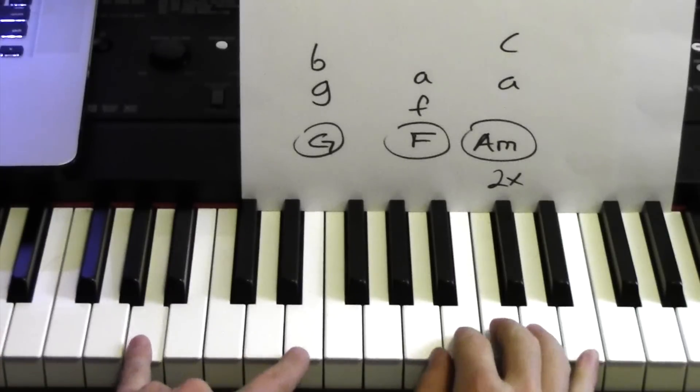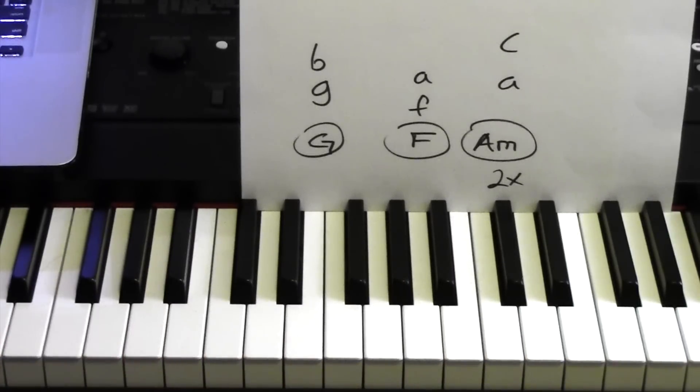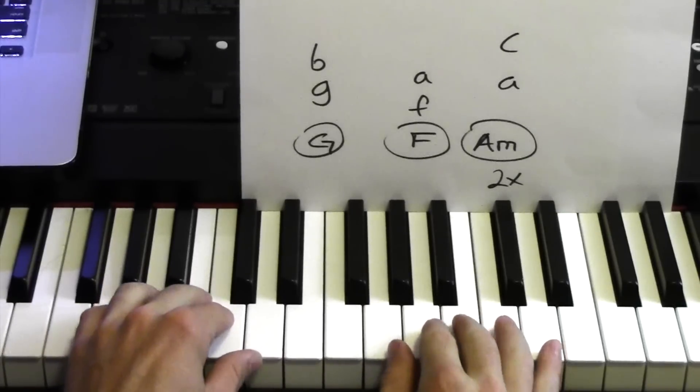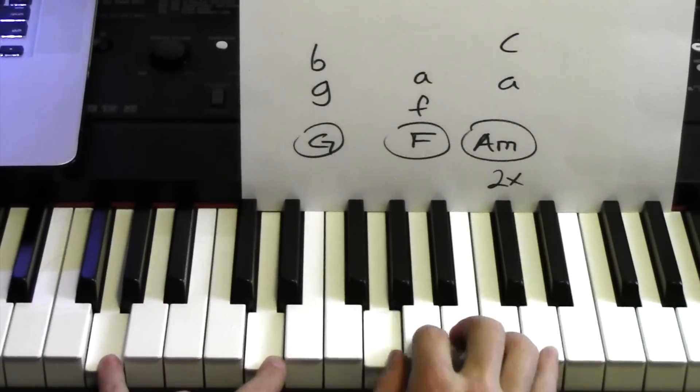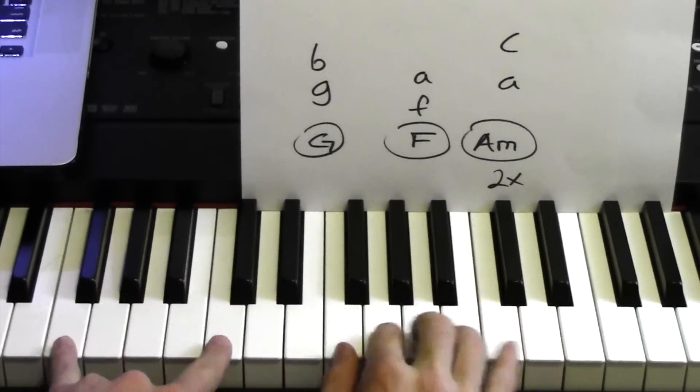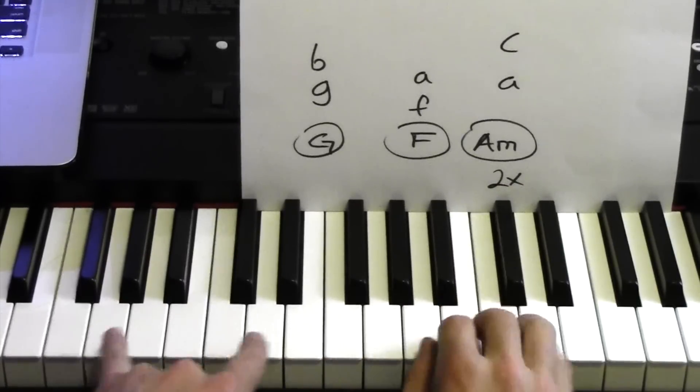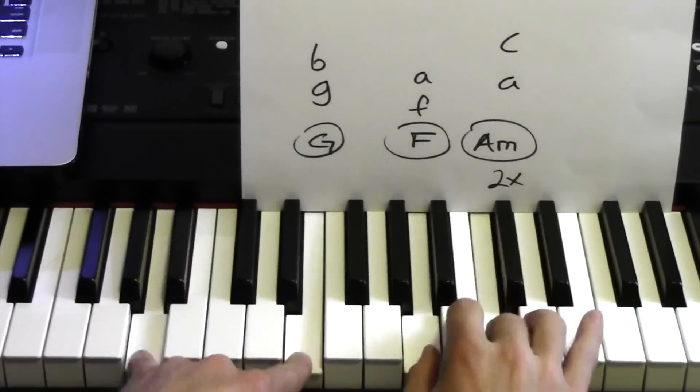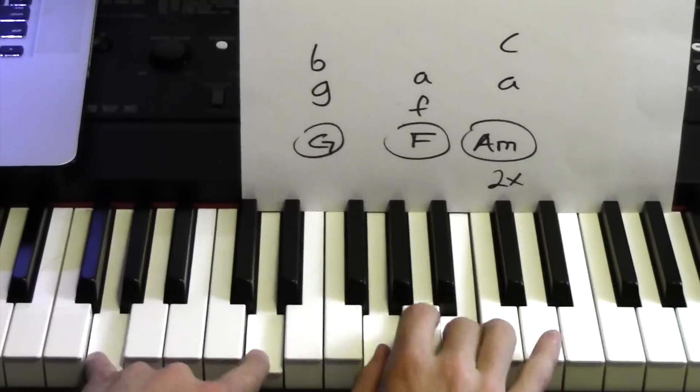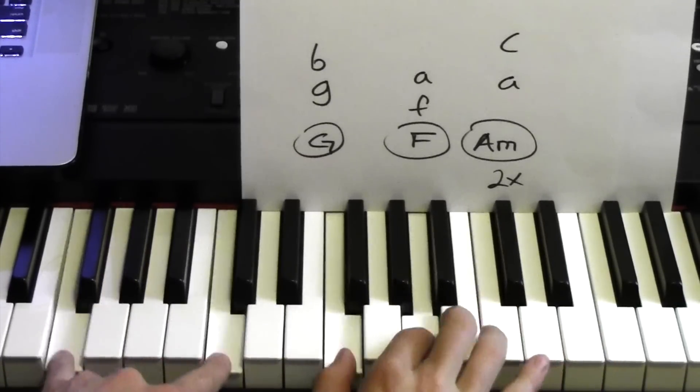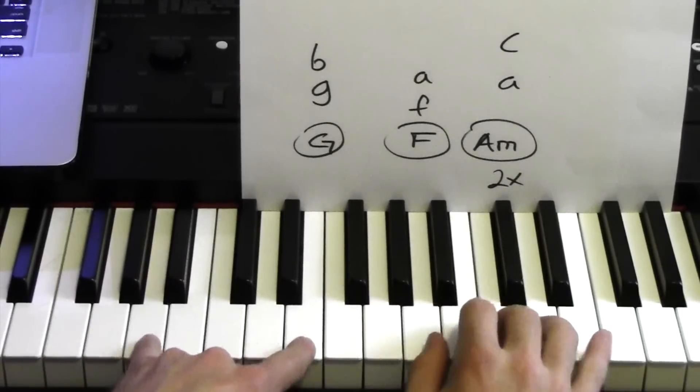All right, so things you can do with this, since it's working on the key is C, you can use any of these white notes. So I can go from the G, using there, to the left, A minor.